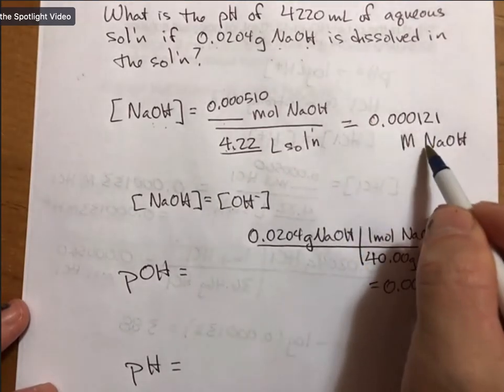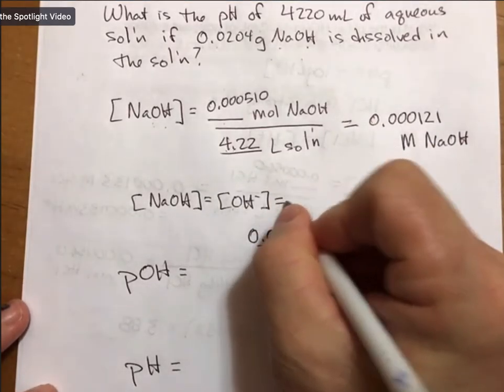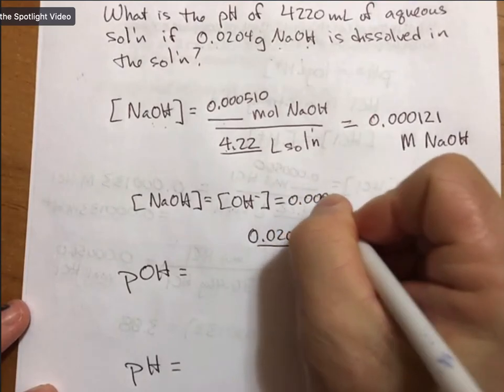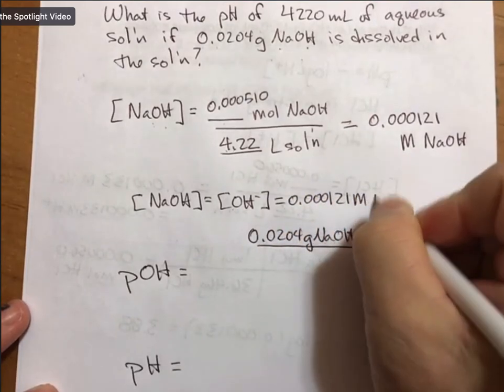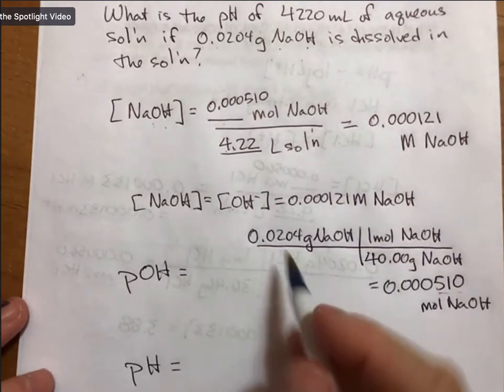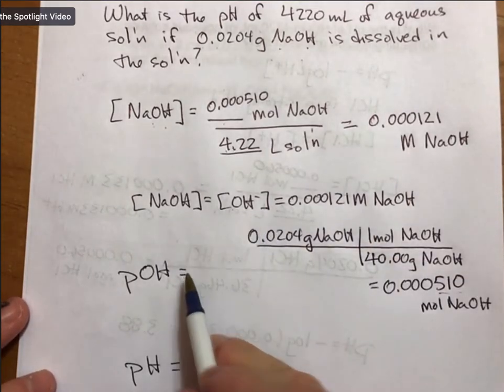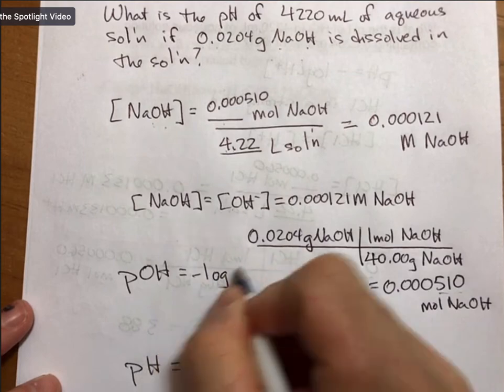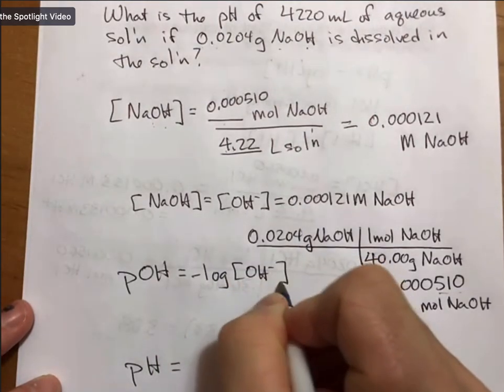This is equal to our molarity of hydroxide, so our pOH is just the negative log of the concentration of hydroxide.